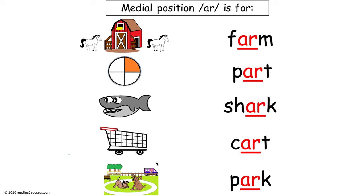Now introduce kids to words that have the A-R R-Controlled Vowel in the medial position — not at the beginning and not as the final sound; the sound is in the middle within the word. Farm, park, shark, cart, and park. Now say all the words with kids and really emphasize the R sound: farm, park, shark, cart, park.